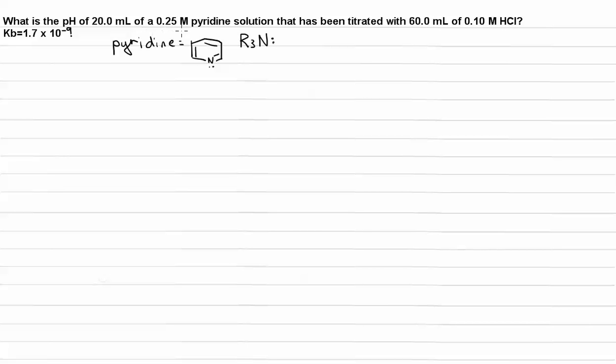So first, let's determine how many moles of each we have. So we have 20 mils of a 0.25 molar pyridine solution. 20 milliliters, for every 1,000 milliliters there is a liter. And the molarity tells me that for every 1 liter there is 0.25 moles of pyridine. So during the course of this reaction we have 0.005 moles of pyridine.